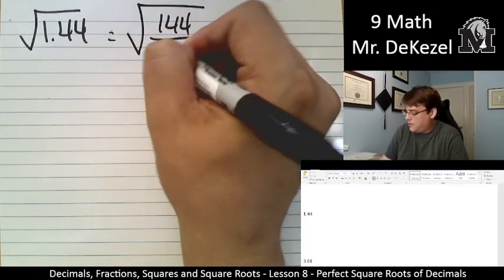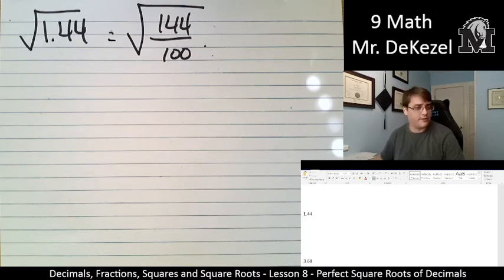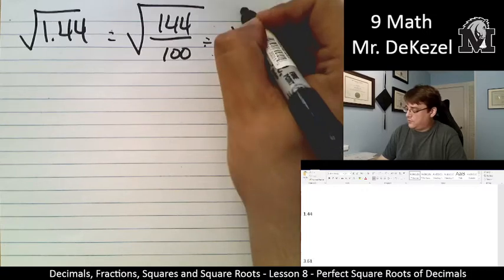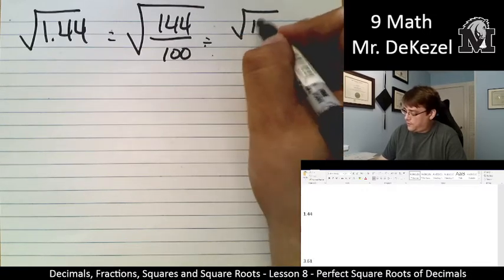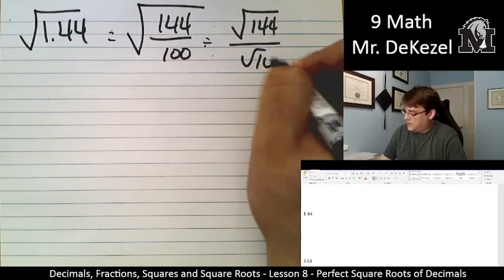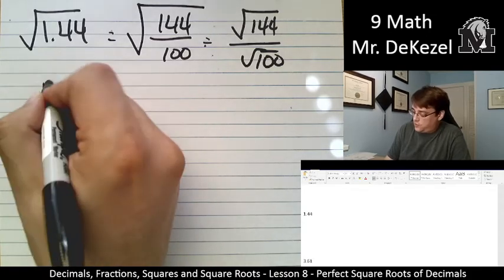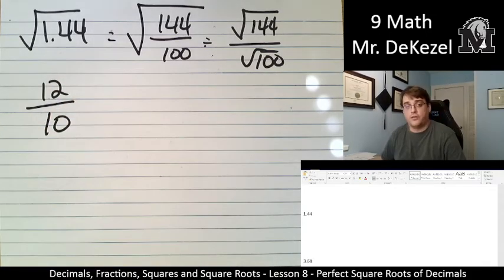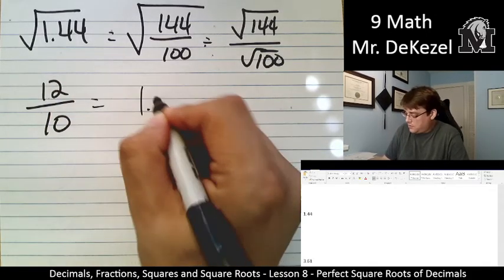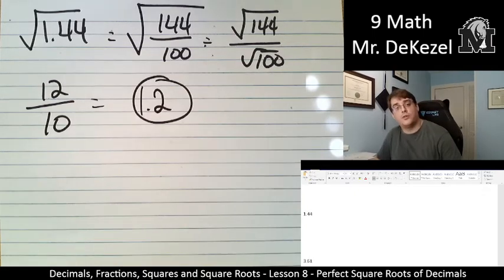It's an improper fraction. I don't really care. That's all right. We know the root of both of these, though. The root of 144 over the root of 100. So that would be 12 over 10, which is 1.2.